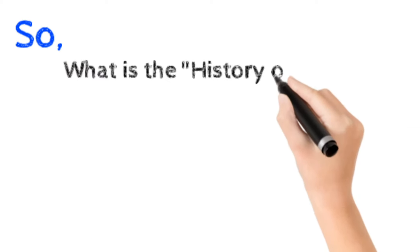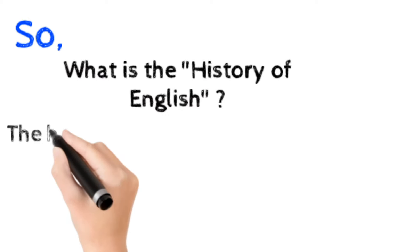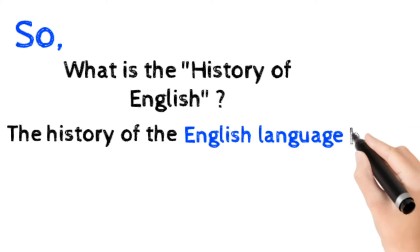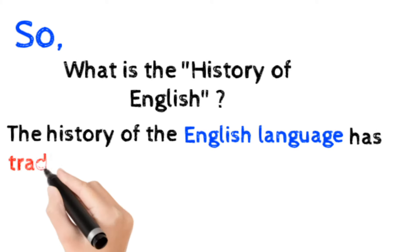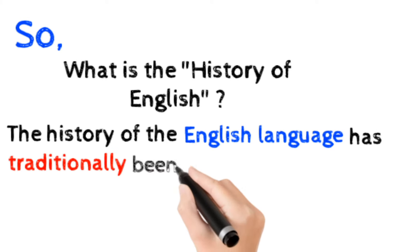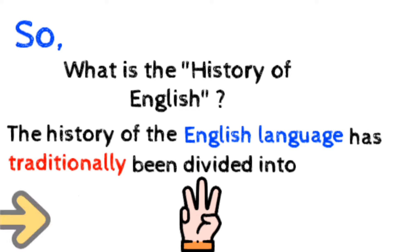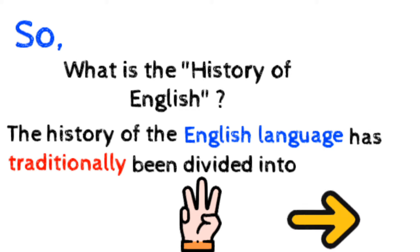What is the history of English? The history of the English language has traditionally been divided into three main periods. Let me tell you about these three periods of English.